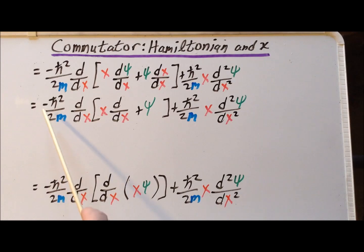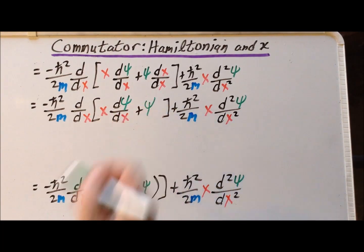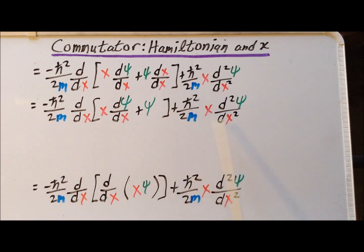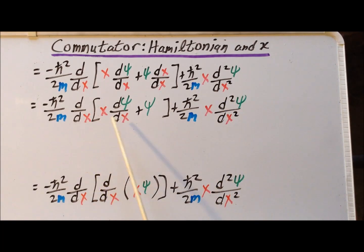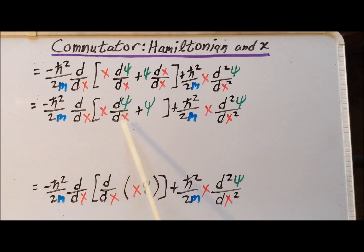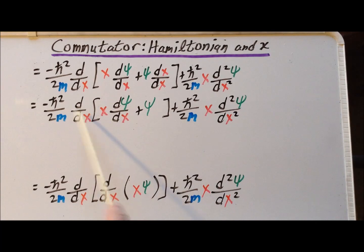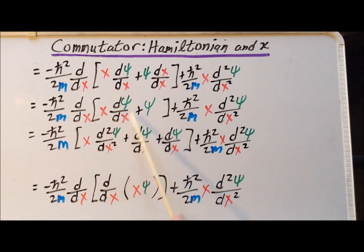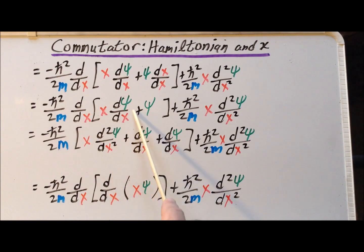This reduces the commutator to minus h-bar squared over 2m times the first derivative of x times dψ/dx, plus ψ, and then plus h-bar squared over 2m times x times the second derivative of ψ with respect to x. We notice that x times dψ/dx is a product of two functions of x, so we must apply the product rule again, using the fact that the differential operator is linear.